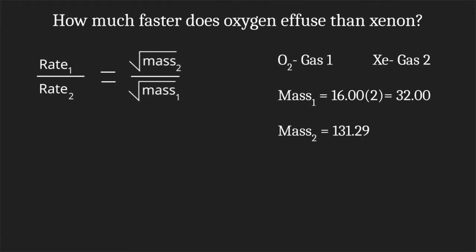Xenon, however, is not diatomic, so mass₂ is going to be its mass on the periodic table, which is 131.29. And lastly, we're going to make rate₂, or the rate xenon effuses, equal to 1. And then whatever the rate of oxygen is, it will be with respect to 1, which is what we want it to be.